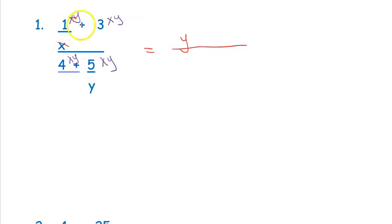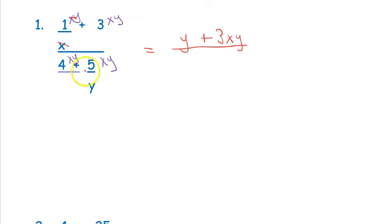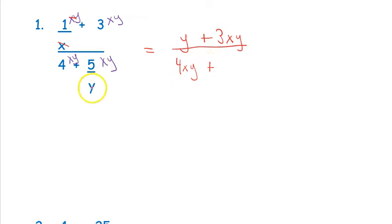Then I have a plus, and over here there was nothing on the denominator of the 3 other than an understood 1, so I just have 3 times xy. On the bottom, again there was nothing under the 4 other than an understood 1, so I have 4 times xy. Then I get to the 5, and I do have something that will cancel — a y that will cancel with this y — leaving me with 5x.